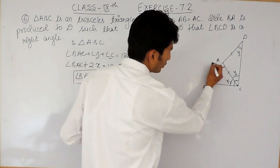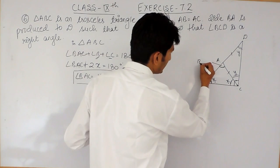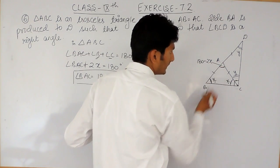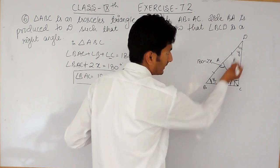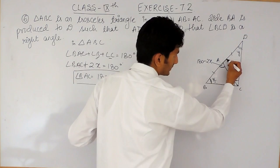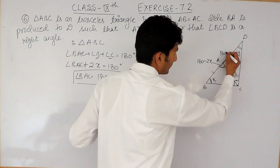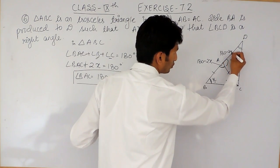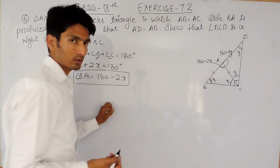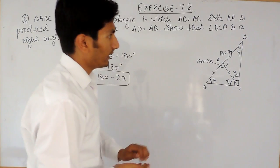Similarly, in triangle ACD, since the two base angles are both Y, by the same logic angle DAC will also equal 180 minus 2Y.